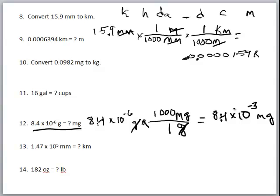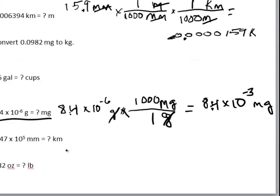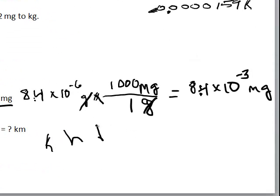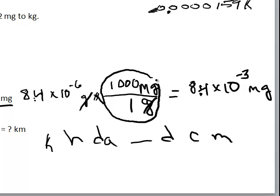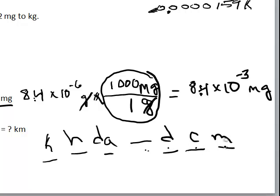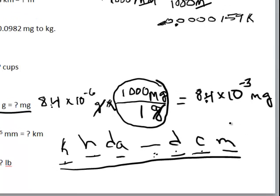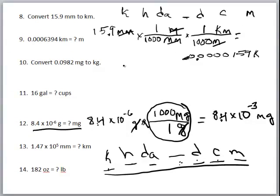To review: when doing metric conversions, it's always handy to move the decimal based on the King Henry relationship. But it's also incredibly important to understand how many of each prefix unit there are in other units — 100 centimeters in a meter, 10 decimeters in a meter, 1,000 millimeters in a meter, 10 meters in a decameter, 100 meters in a hectometer, and 1,000 meters in a kilometer. On the next podcast, we'll start looking at conversions using units other than the metric system.